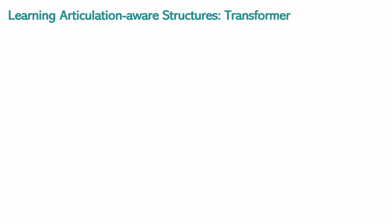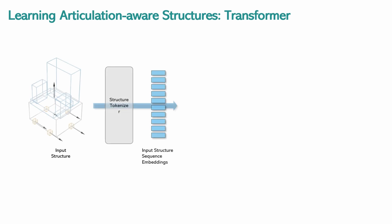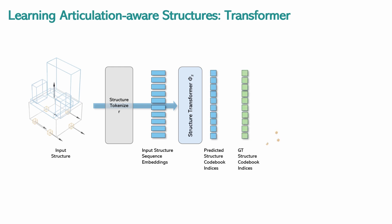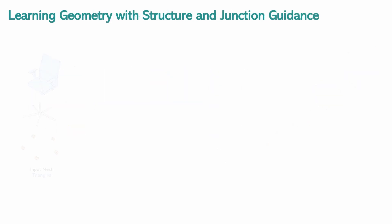Once the structure codebook is trained, bounding box triangle features can be extracted, quantized, and sequenced. A decoder-only transformer is then trained with next-token prediction to model the distribution of articulated object structures. During inference, the transformer can unconditionally generate structures with articulation attributes. We learn a separate geometry codebook in a similar fashion.